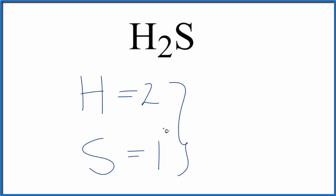If you add these two numbers up, two plus one, you get three total atoms in H2S, in a molecule of H2S.